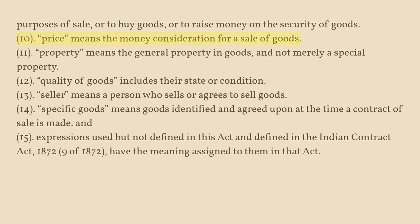(10) Price means the money consideration for a sale of goods. (11) Property means the general property in goods, and not merely a special property. (12) Quality of goods includes their state or condition. (13) Seller means a person who sells or agrees to sell goods. (14) Specific goods means goods identified and agreed upon at the time a contract of sale is made. (15) Expressions used but not defined in this Act and defined in the Indian Contract Act, 1872 (9 of 1872), have the meaning assigned to them in that Act.